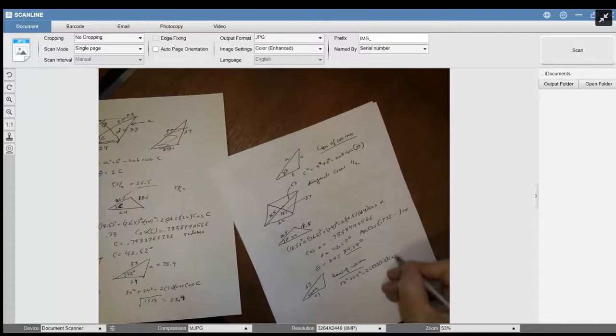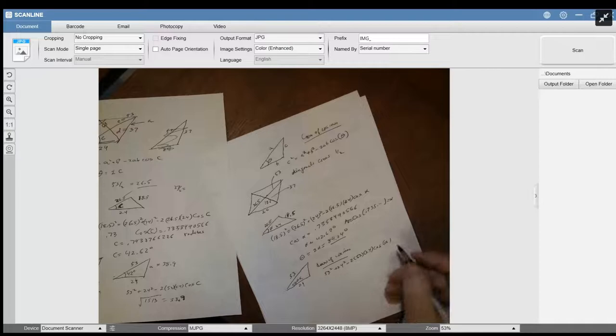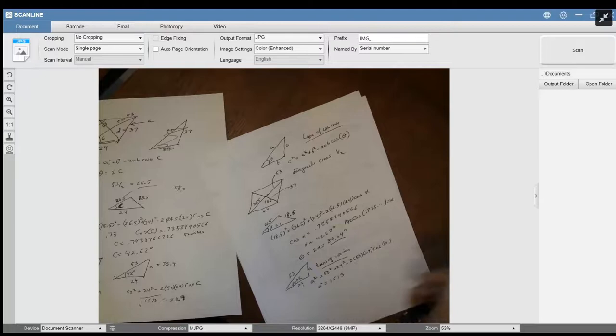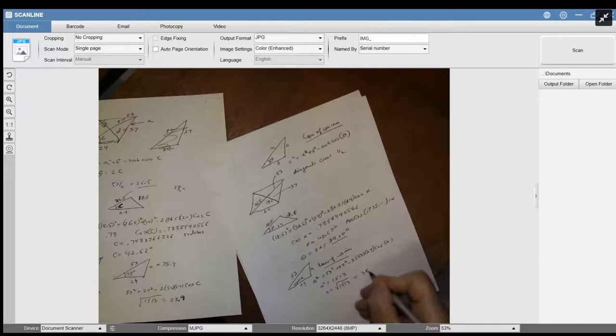And so you end up with, this is actually equal to A squared. So A squared is going to be equal to 15.13 approximately when you work it out. So A is equal to square root of 15.13, which is equal to 38.9.